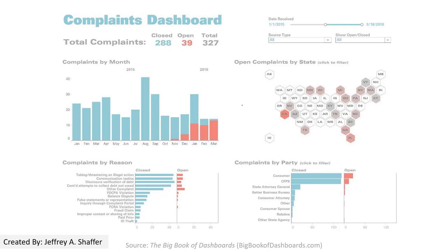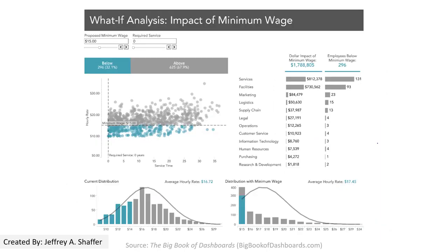The hex map of the U.S. also acts as an interactive filter. The bar chart at the bottom separates the open and closed complaints and provides more details on the reasons. This 'What-If' dashboard has a very similar design — notice the use of color: blue is used for the minimal width, gray is above minimal width, and color is used consistently throughout the dashboard.